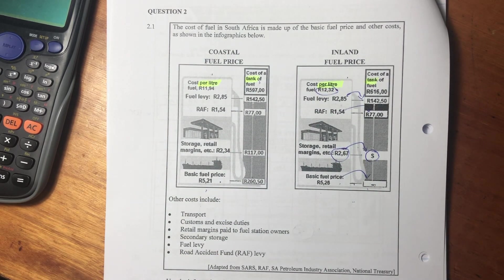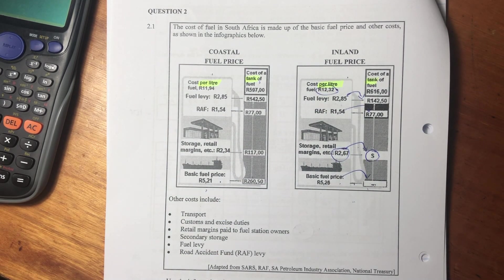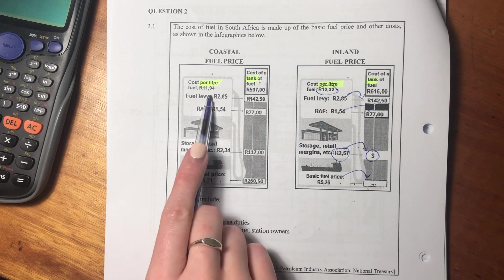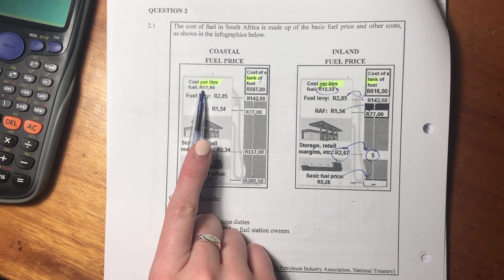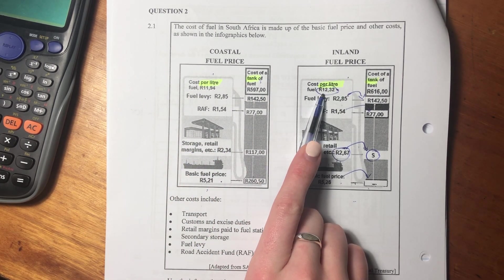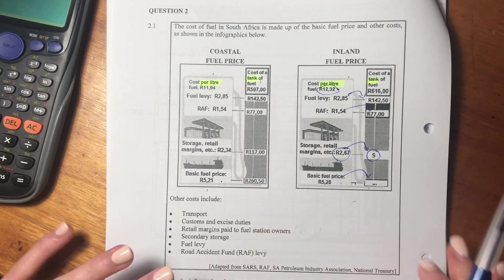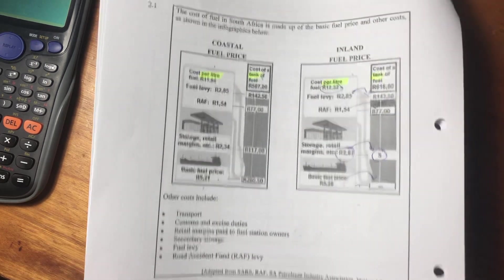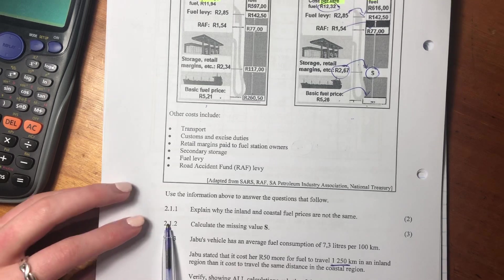So remember a tank is just a number of liters. Your cost of a tank is always going to be more than your cost of a liter. We see that the cost of the coastal liter is less than the cost of an inland liter. But let's now go and look at the questions.